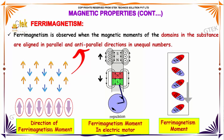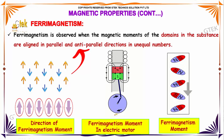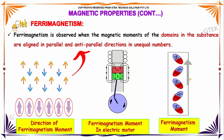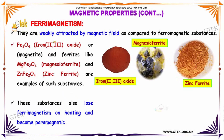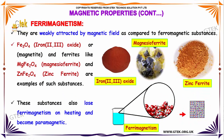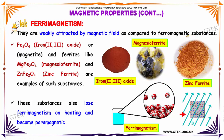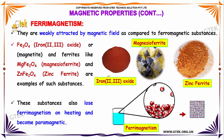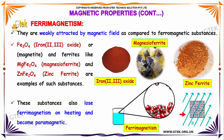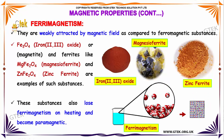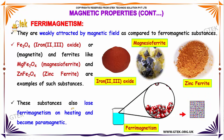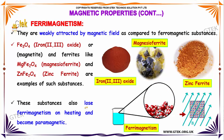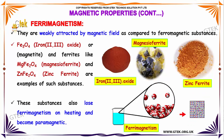The ferrimagnetic moment in an electric motor compared to a ferromagnetic moment — they are weakly attracted by a magnetic field as compared to ferromagnetic substances. Iron oxide, magnetite, and ferrites like magnesio ferrite and zinc ferrite are typical examples of ferrimagnetism. Ferrimagnetism is also lost on heating, becoming paramagnetic in nature.